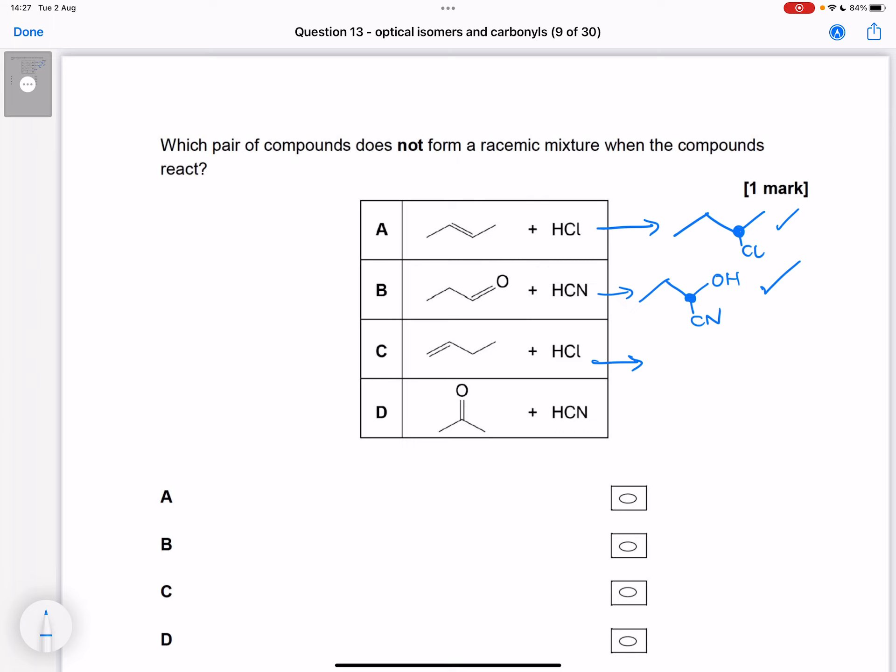If we do HCl, the major product of this you would assume would be 2-chlorobutane, which is the same as A, and so we would get some of that. And even if we did get the other isomer which doesn't have optical isomers, we would still get optical isomers from the 2-chlorobutane.